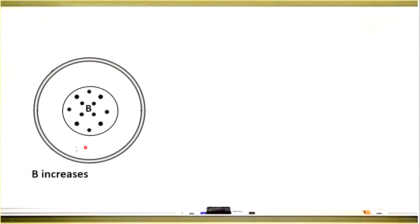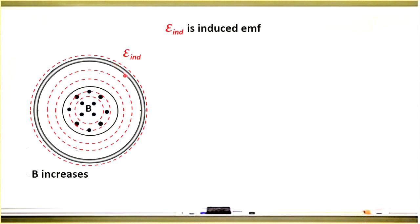When B increases, in the space around the magnetic field appears an electric field, and the field lines of this electric field have circular shape. There is also induced EMF in the coil.